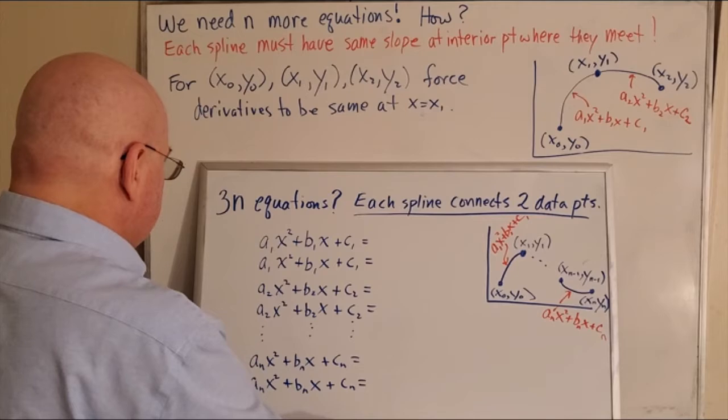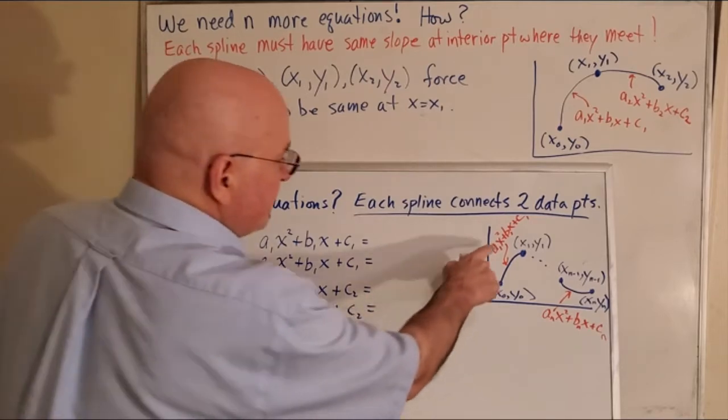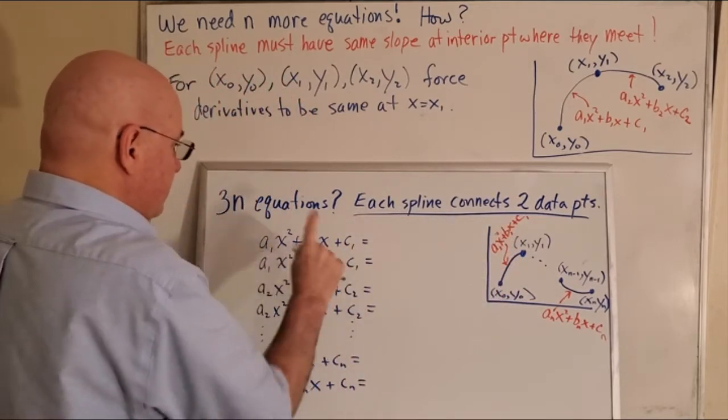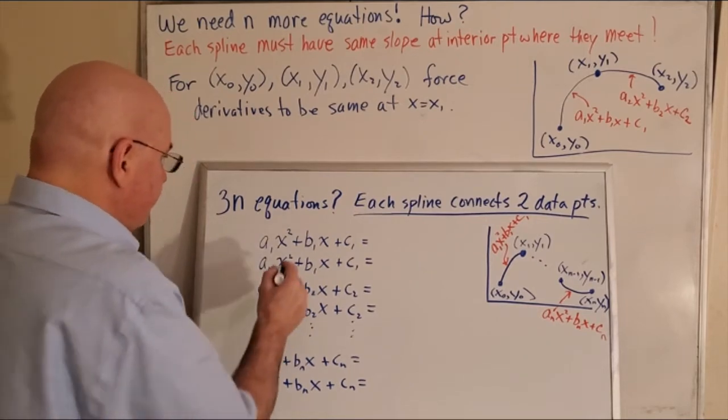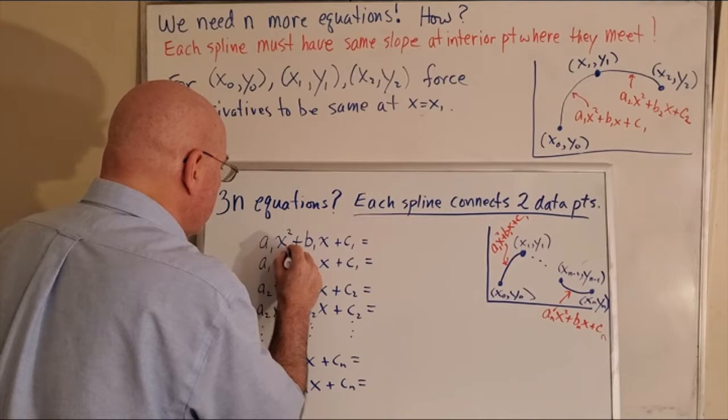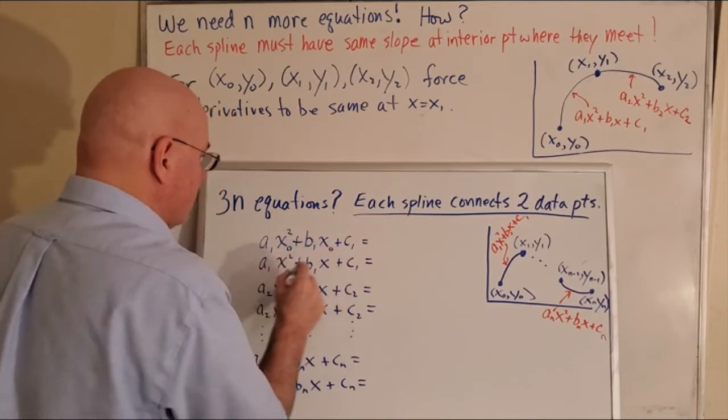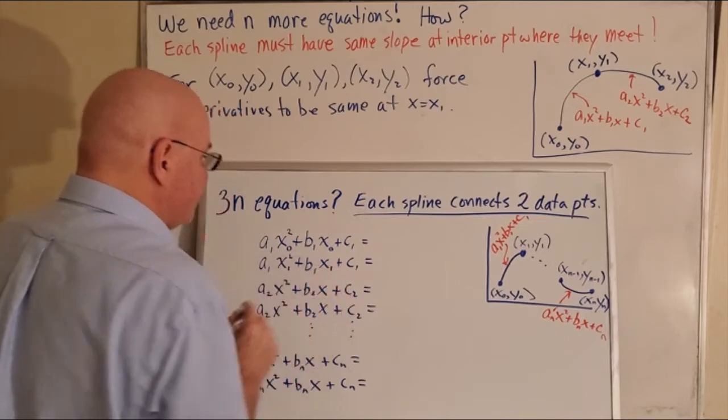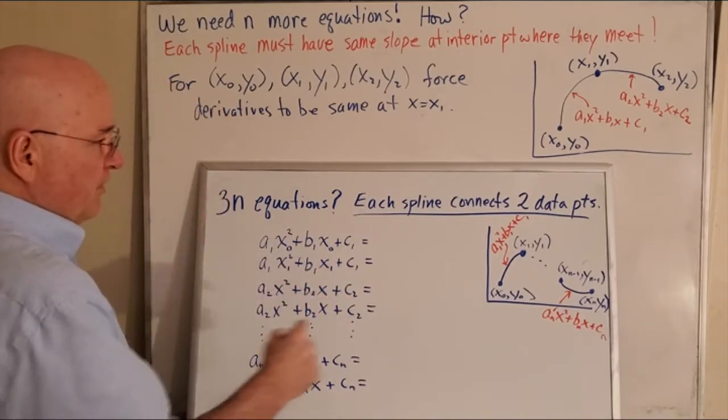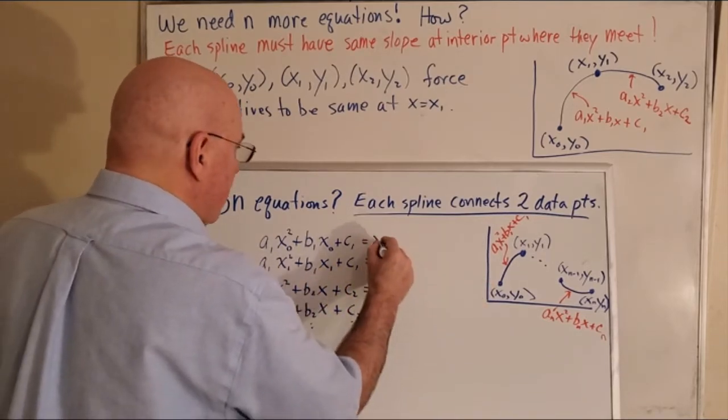Take a look at this equation. I write it down twice. Why did I write it twice? Because I'm going to plug in x0 in the first one and x1 in the second one. When I plug in x0, I should get y0.